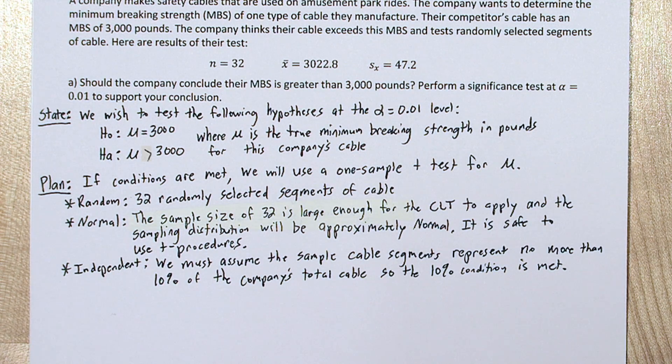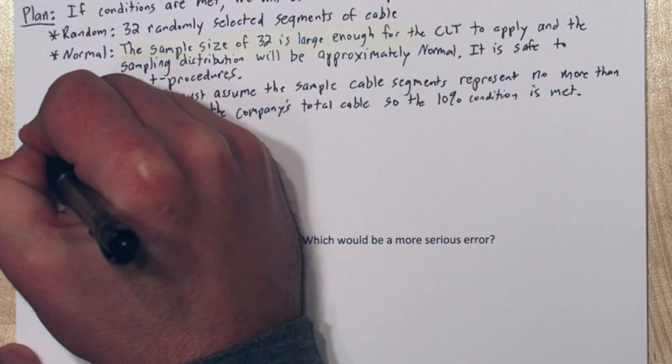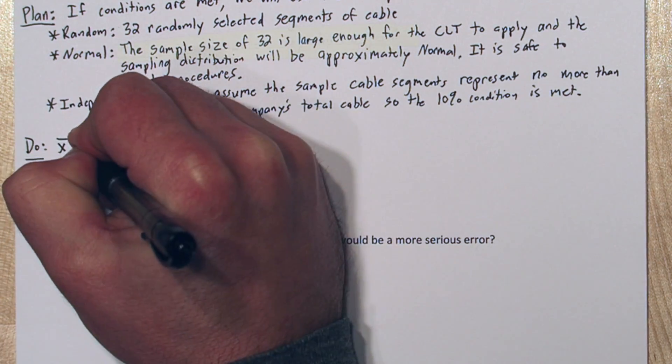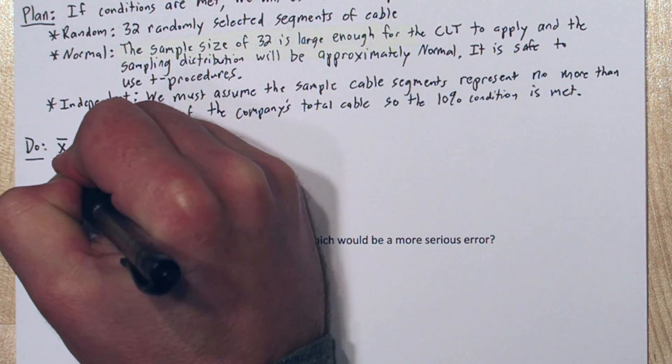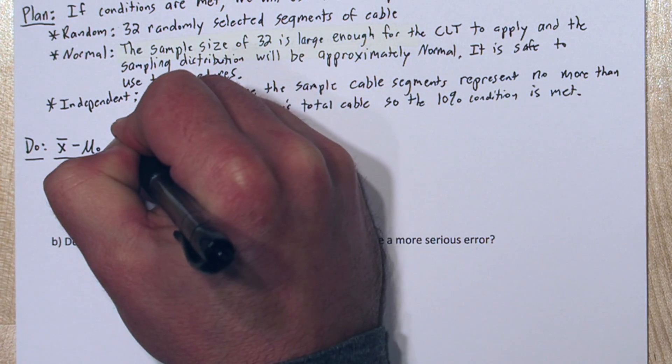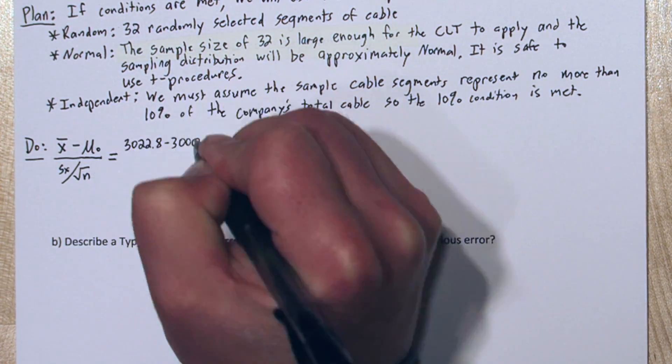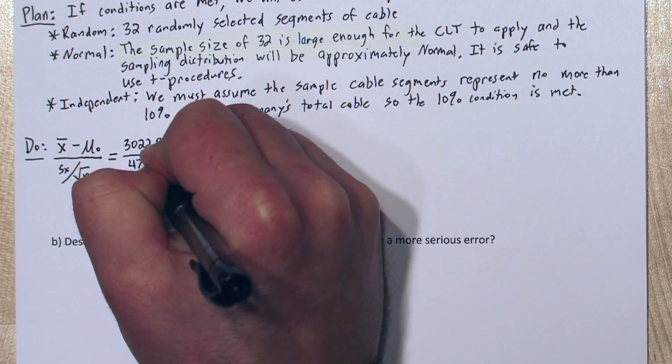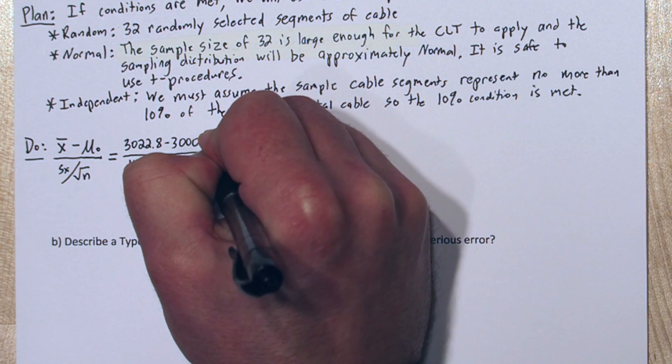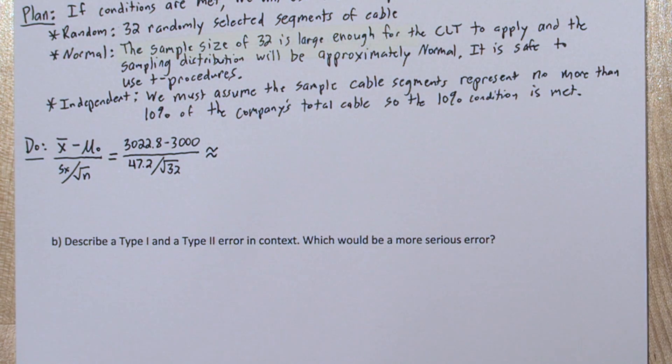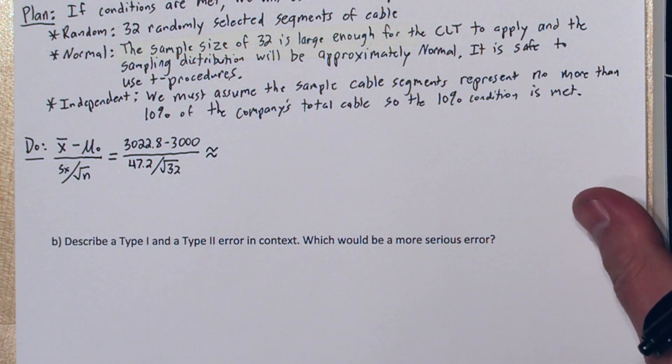Now we're ready for the do step and we're going to calculate our test statistic. So we're going to take our sample mean, 3022.8, and subtract the mean of our null hypothesis, 3000. We're going to divide that by the standard error, which is 47.2 divided by the square root of the sample size, 32.